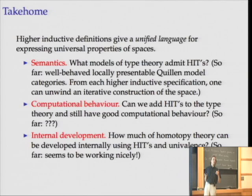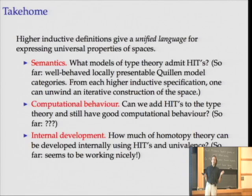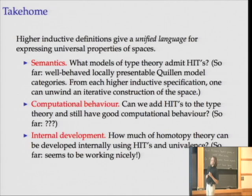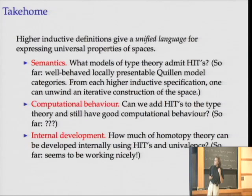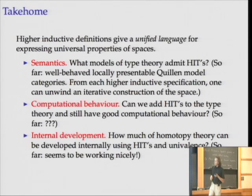What's open? The semantics: what models of type theory can you model these in? We have some nice theorems so far — if you have decently well-behaved locally presentable Quillen model categories, you can model these by unwinding the definition into an iterative construction. The computational behavior — tying into what Dan was saying last week — whether we can preserve good proof-theoretic properties with higher inductive types is still wide open. And internal development: how much homotopy can we do in type theory using higher inductive types and univalence together? Everything so far has seemed to work quite nicely.